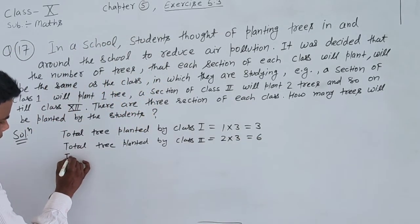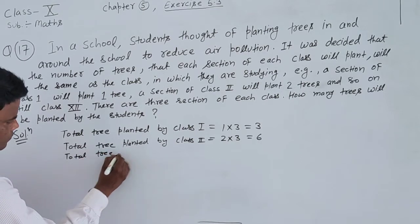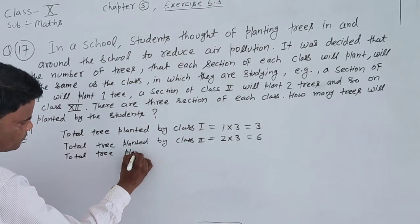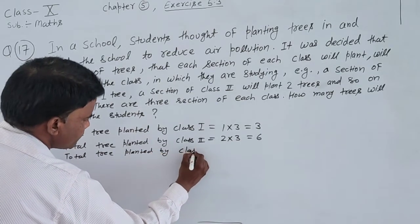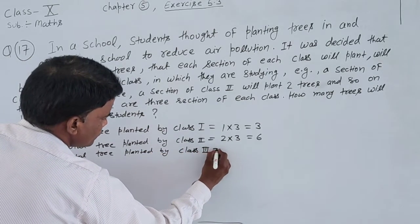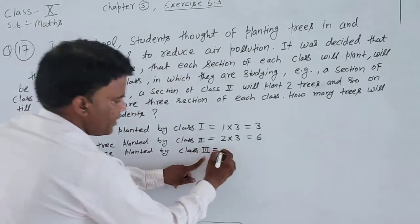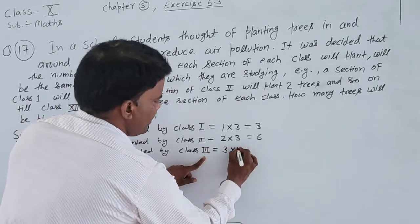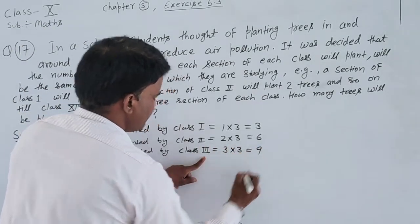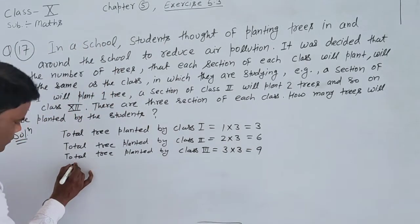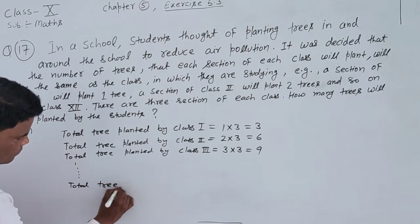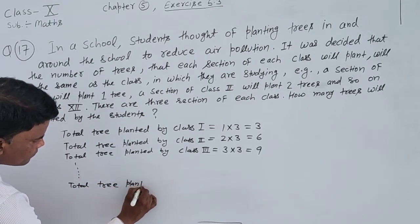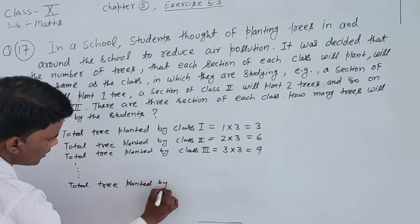Total trees planted by class 3: 3 times 3 equals 9. Similarly, trees planted by class 12: 3 times 12 equals 36.